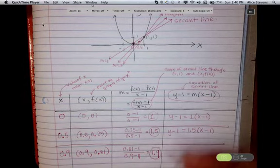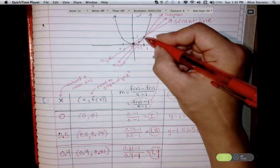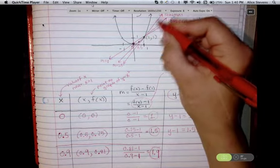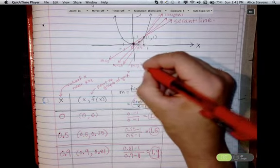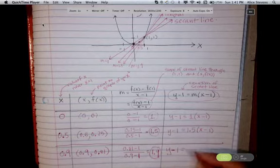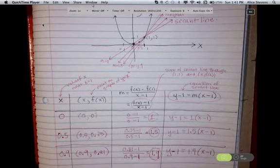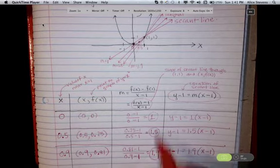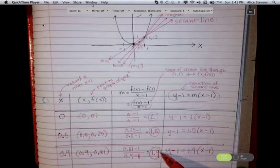The equation of this secant line, which is going to be very close to the tangent line. The equation of this line is y minus 1 equal to 1.9 times x minus 1. So you can see that it seems like the slopes of the secant lines are approaching the value 2.